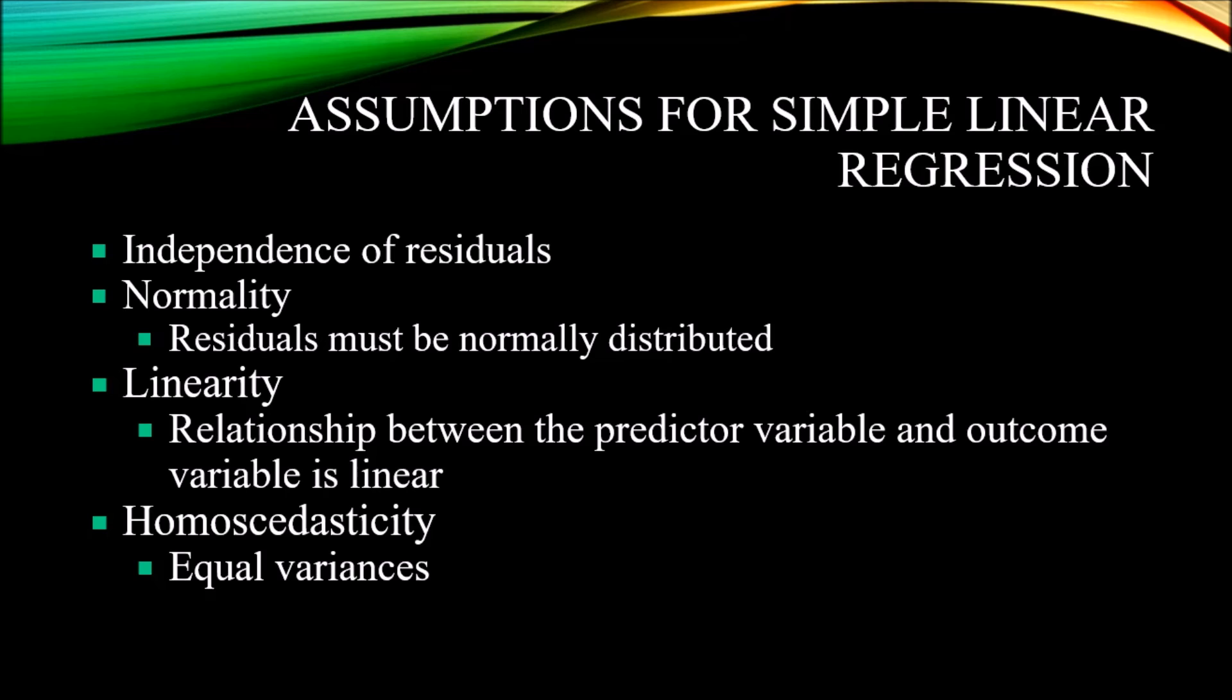The next assumption is the assumption of normality. The residuals in a regression must be normally distributed. And typically, we use a few different methods to assess whether we're working with a normal distribution or not. One would be the Shapiro-Wilk test, and this is often used with an alpha of 0.05. So a result on a Shapiro-Wilk test of less than 0.05, in that case, we would assume we violated the assumption of normality. And a probability value greater than 0.05 would lead us to believe that we have met the assumption of normality. To assess normality, we also want to look at skewness and kurtosis, as well as a histogram of the residuals.